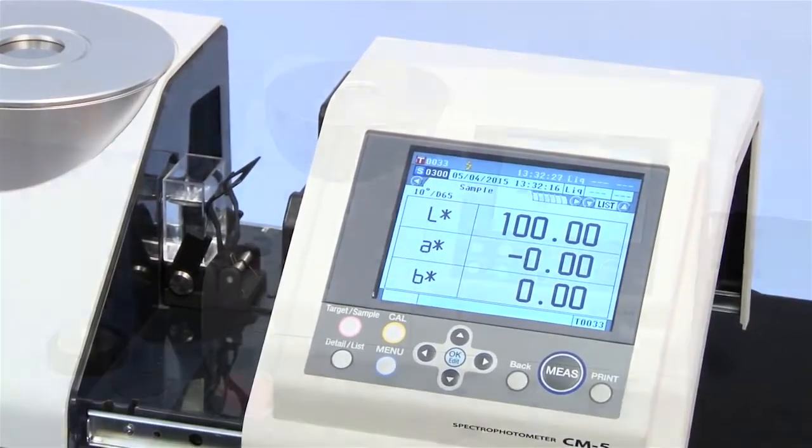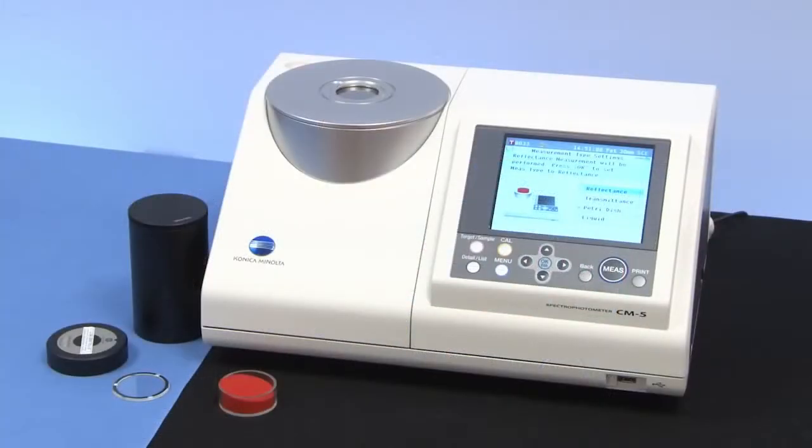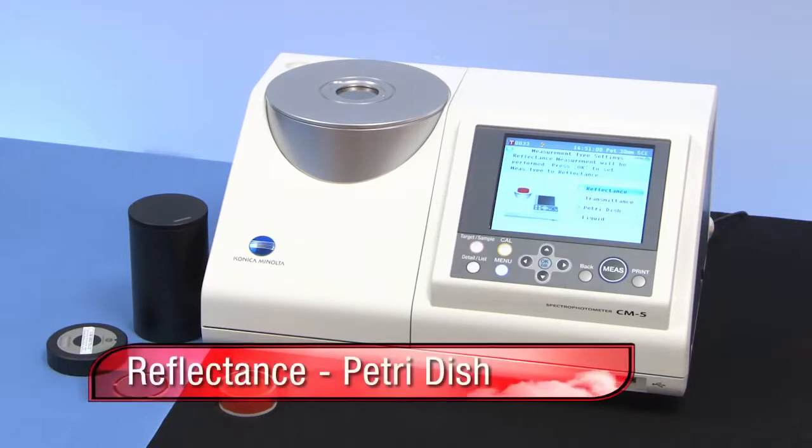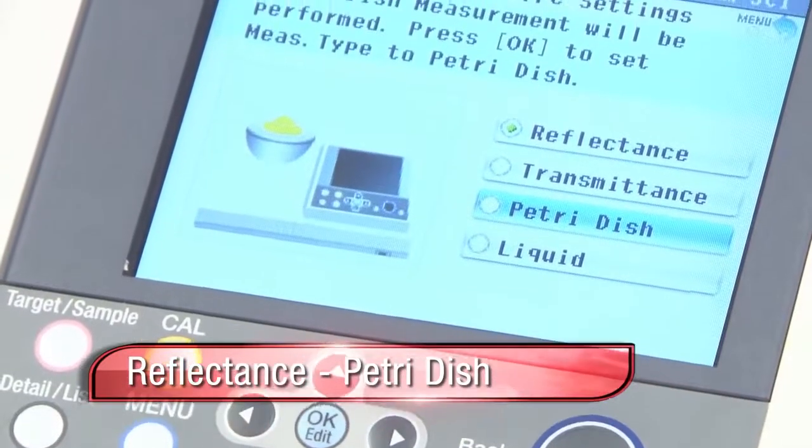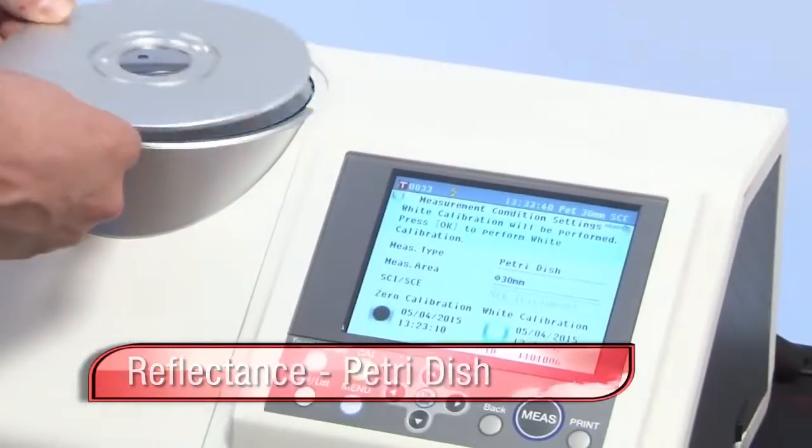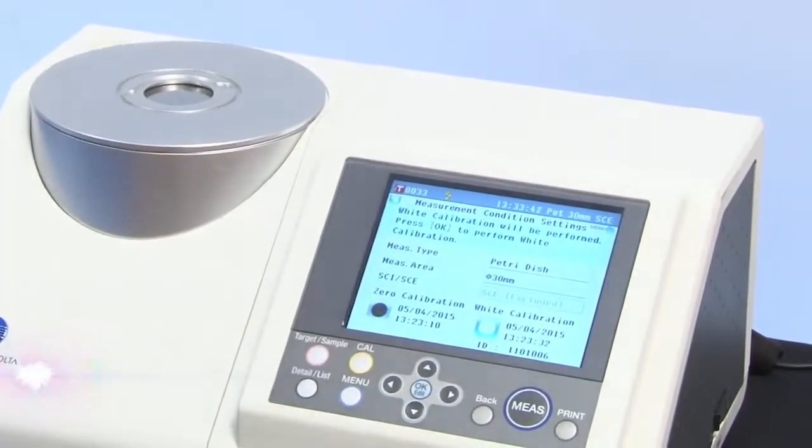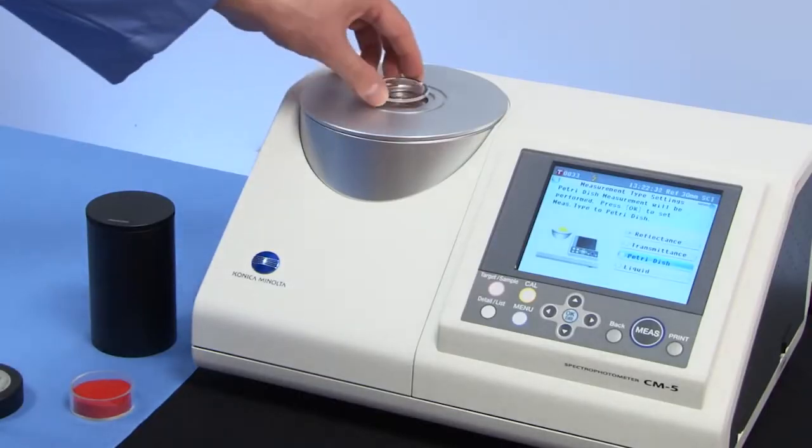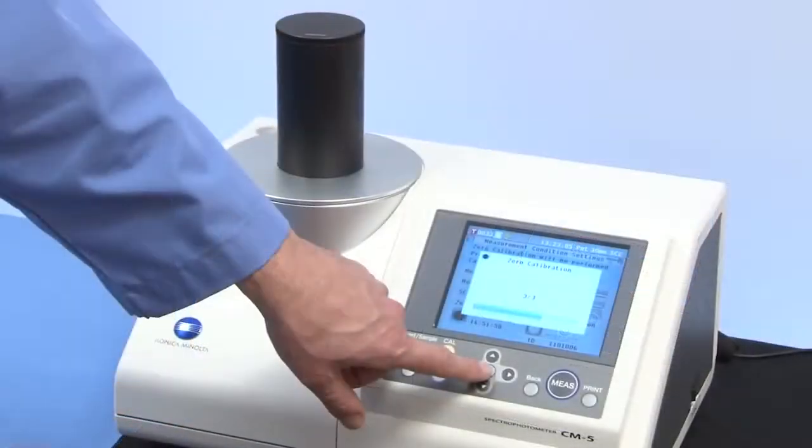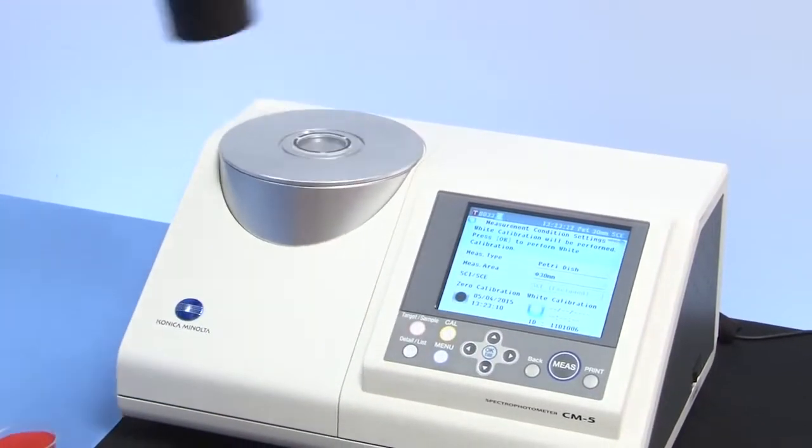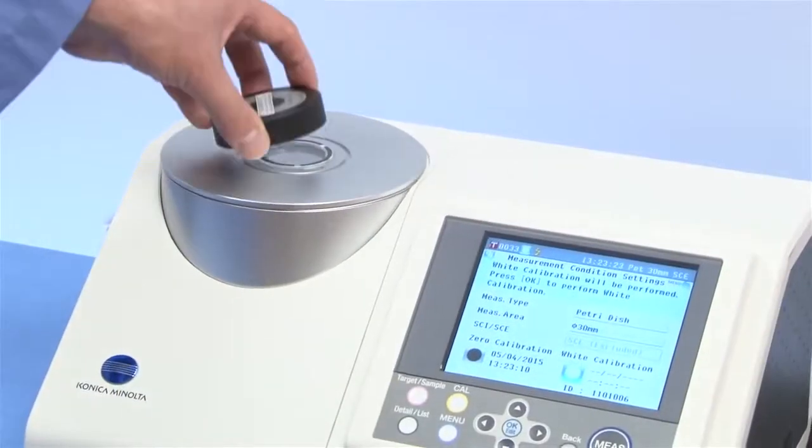Click the CM5 to your measurement requirements. To perform a reflectance measurement in petri dish mode, put the special target mask in place, followed by the glass accessory piece. Perform zero calibration, and then an external white calibration through the glass piece.